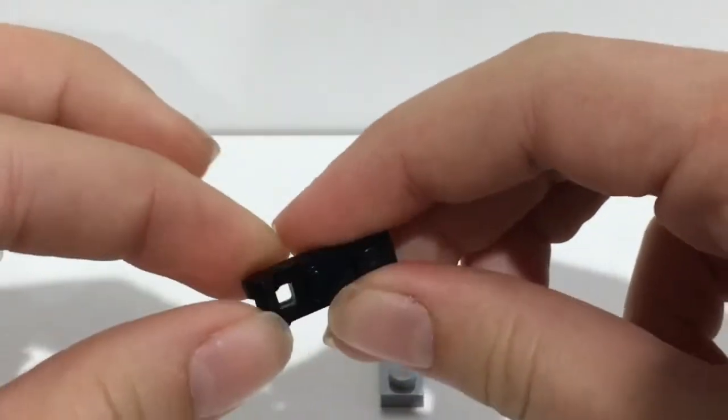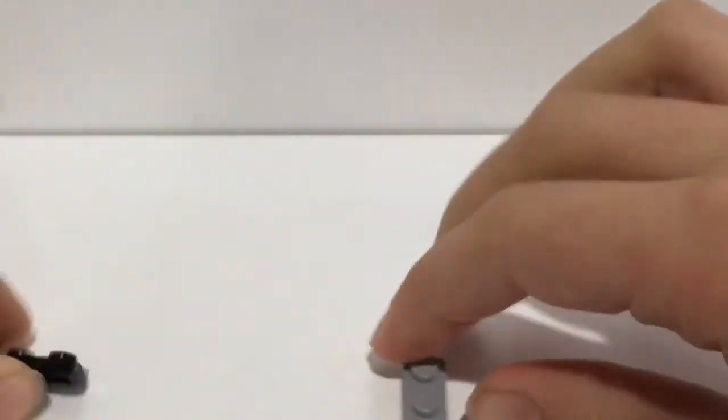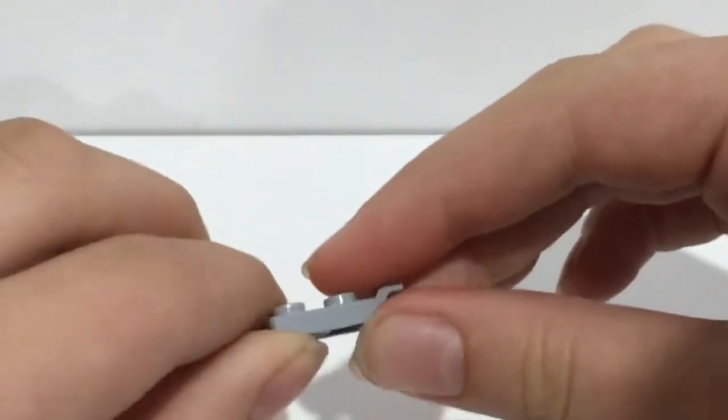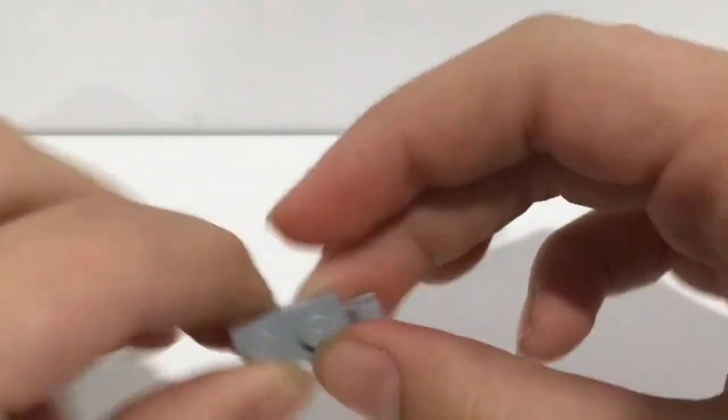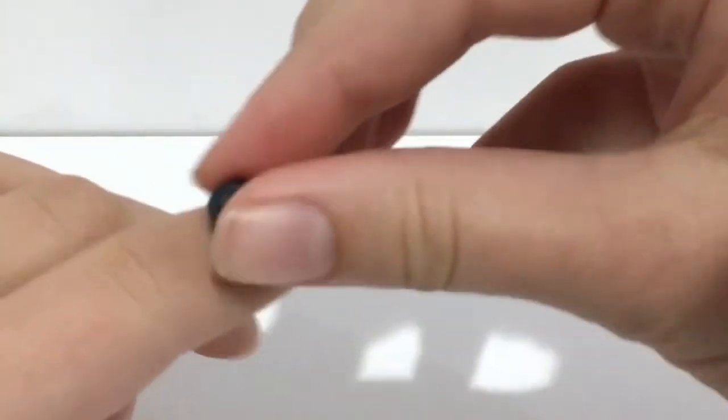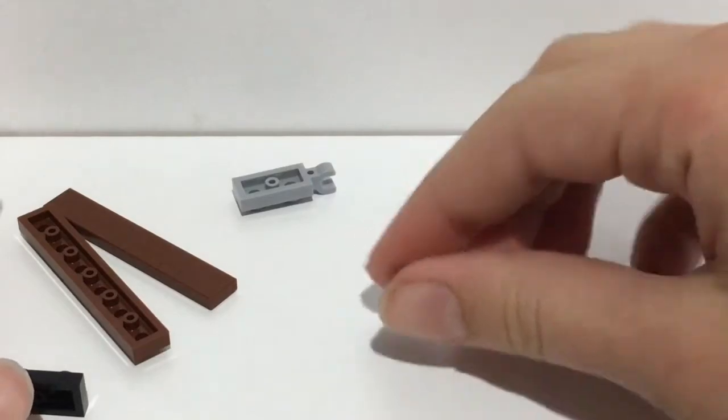You will need two of these black light clip-on plates, two of the light gray clip-on things, and you'll need four black studs. So quite a few pieces there.